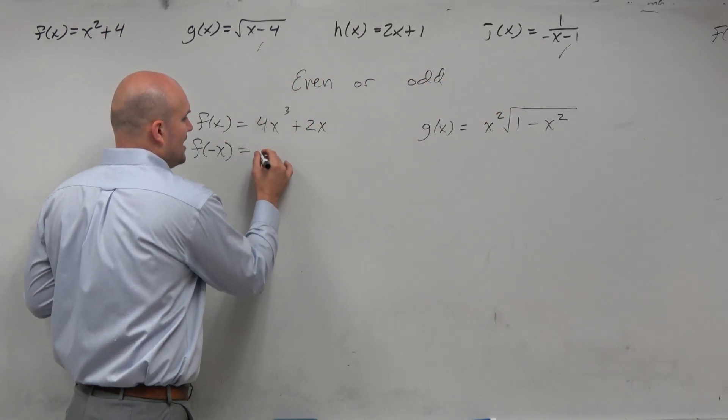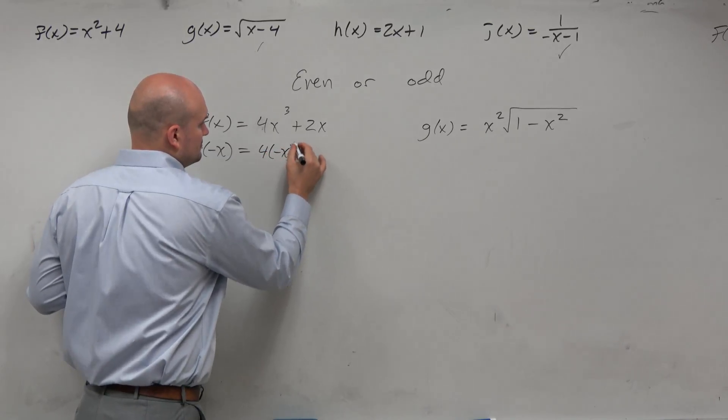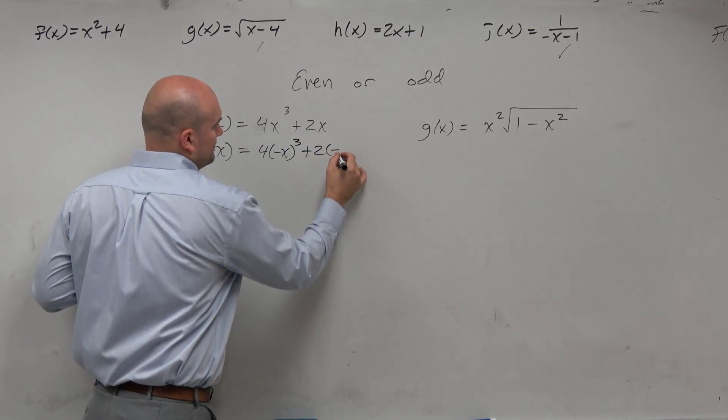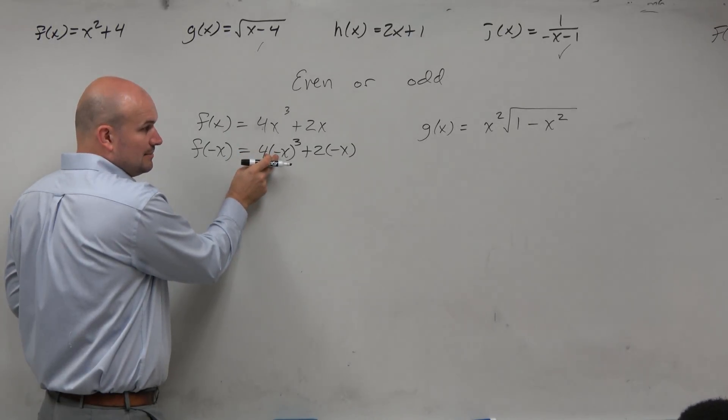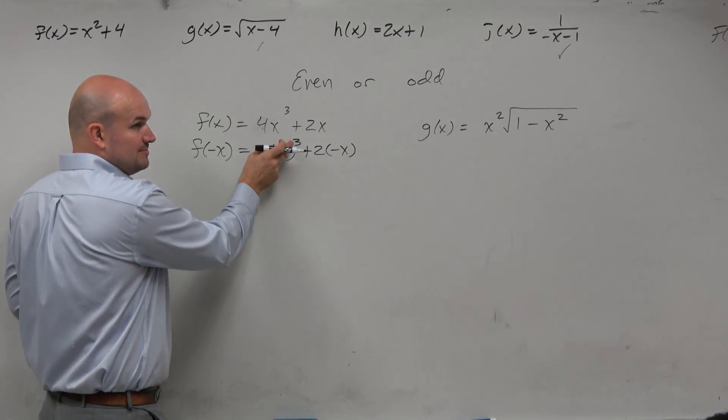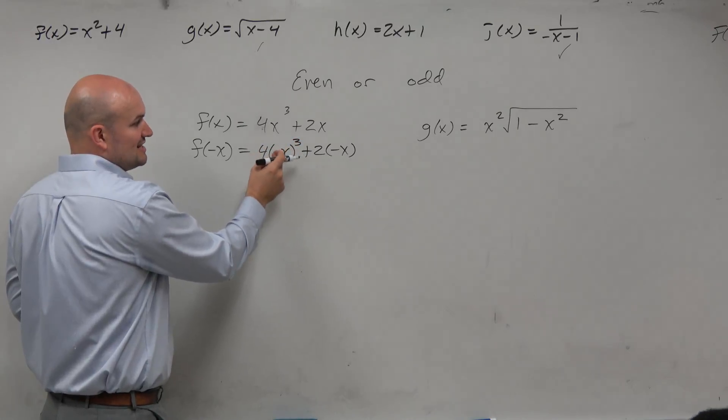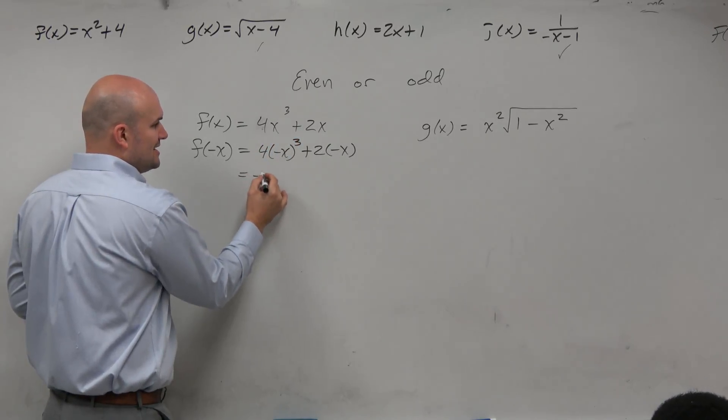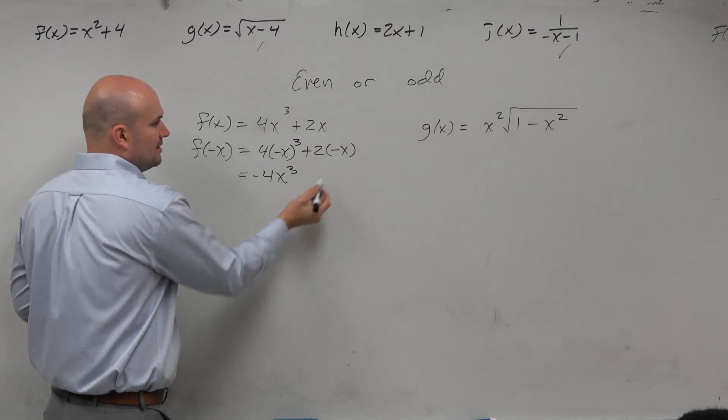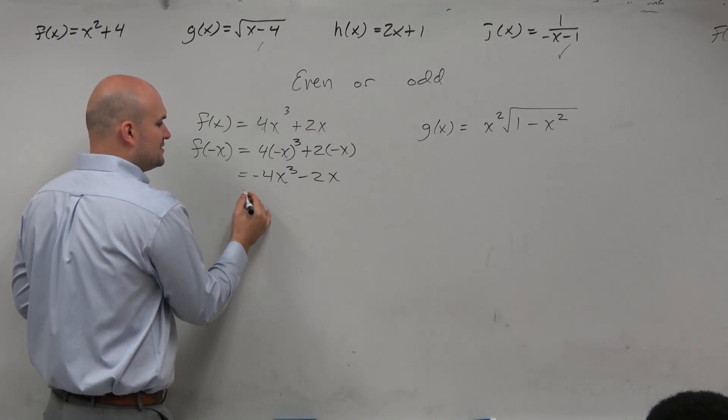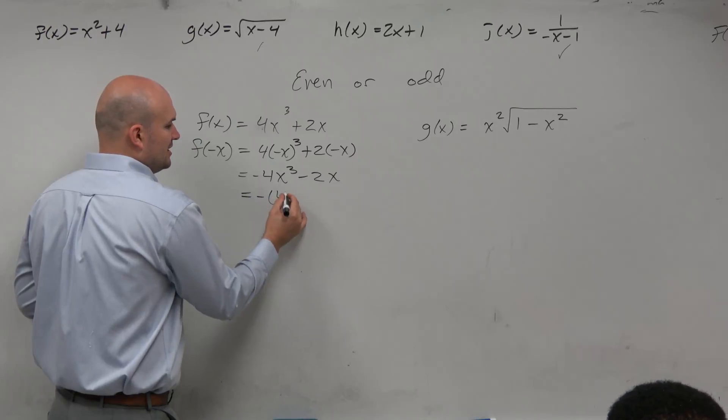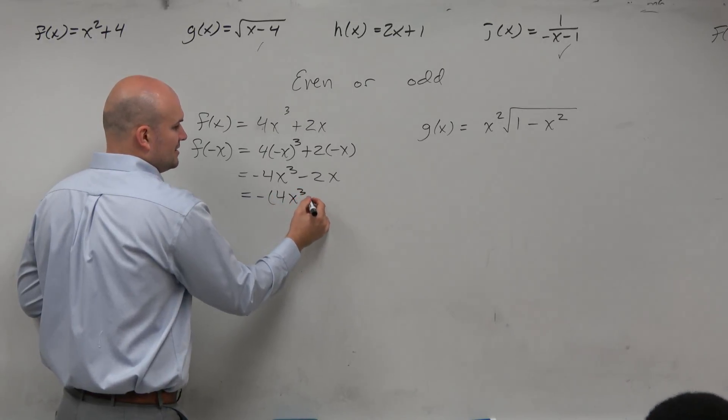So when I evaluate f of negative x, a negative number raised to an odd power is always going to be negative. So that's negative x cubed times 4, which is negative 4x cubed. 2 times negative x is negative 2x. I can factor out the negative. You don't have to, but you'll see why I'm doing that in just a second.